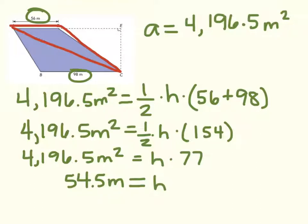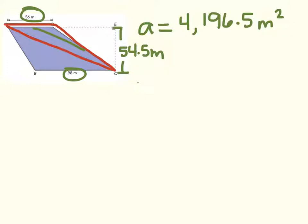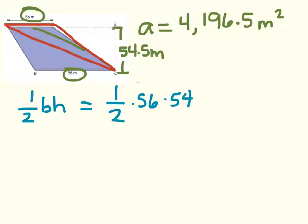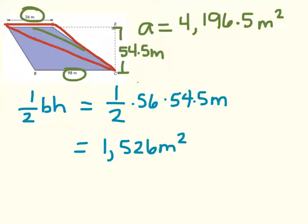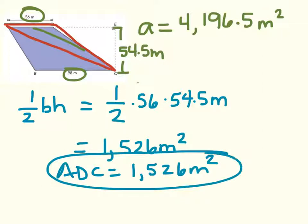Now we know the height of our trapezoid — this distance right here — is 54.5 meters. We have all the information we need to solve for the area of triangle ADC. The area equals one half times its base times its height: one half times 56 meters times 54.5 meters, which gives us 1,526 meters squared. So the area of triangle ADC is 1,526 meters squared. If you wanted to find the area of triangle ABC, that would be a simple matter of subtracting the area of ADC from the overall area of the trapezoid.